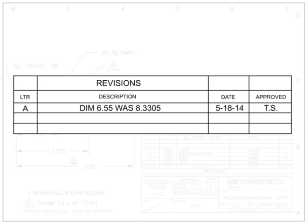Other information sometimes contained in this area includes the zone where the change can be found, other signatures required to approve the change, and the serial number to indicate when the part change became effective.